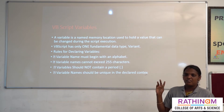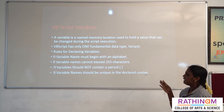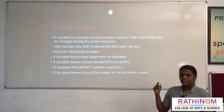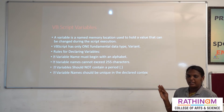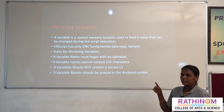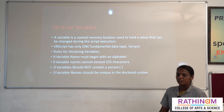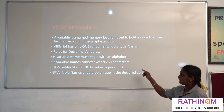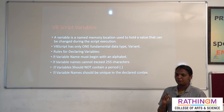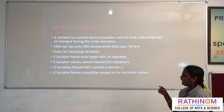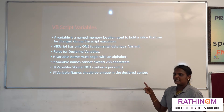Now let us look at variables. A variable is a named memory location used to hold a value. It can be changed during script execution. VBScript has only one fundamental data type, which is variant. The rules for declaring a variable name in VBScript are: the variable name must begin with an alphabet, it is user-defined, and the variable name cannot exceed 255 characters in length.